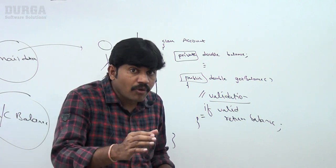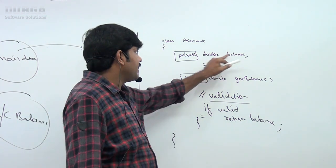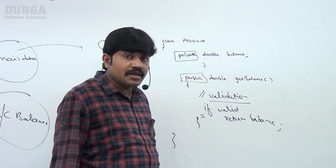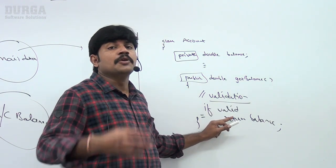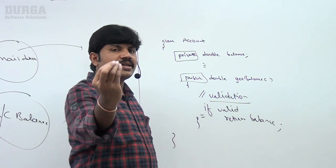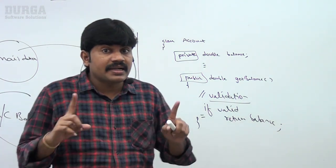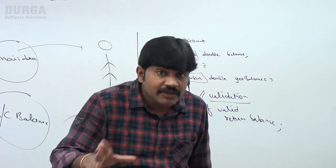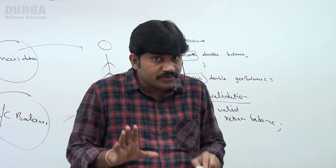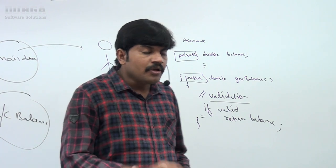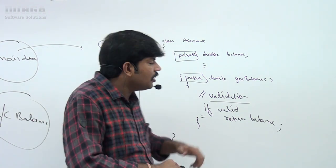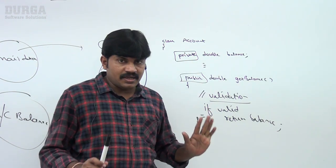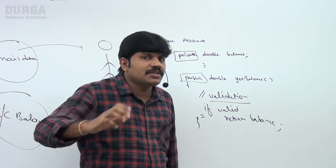Outside persons should not access our data directly. Compulsorily they have to call a method, and within that method we perform validation. If validation succeeds, only then we provide our data. This is the concept of data hiding. How to implement data hiding? By declaring the variable with the private modifier.